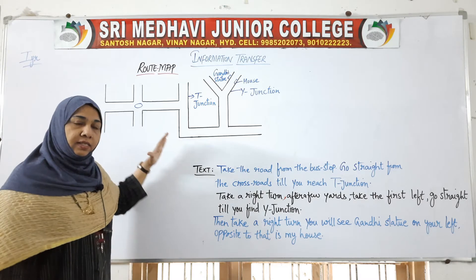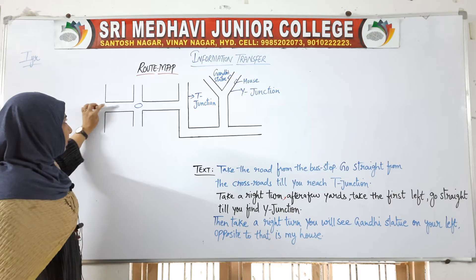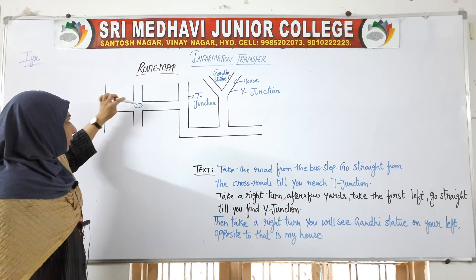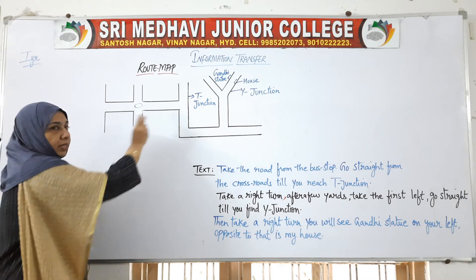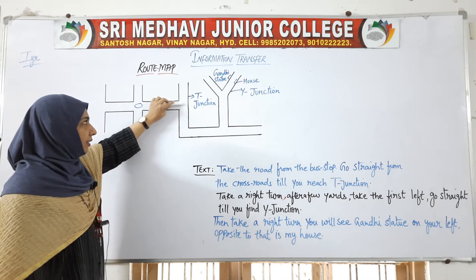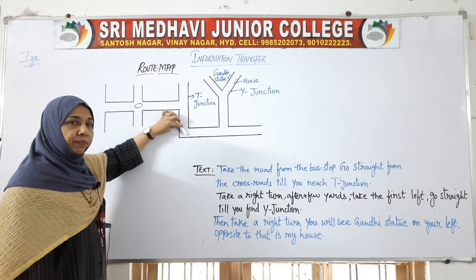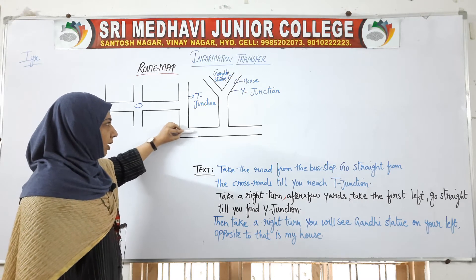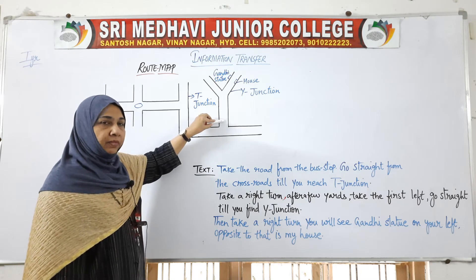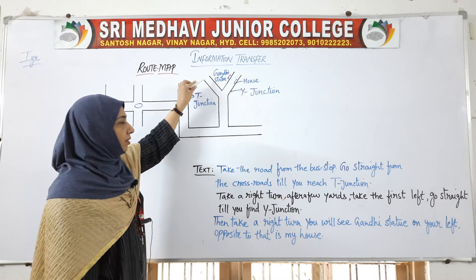Now we'll read the text. 'Take the road from the bus stop.' Imagine the bus stop is here. 'Go straight from the crossroads' — as I said, this is the crossroads. 'Till you reach the T-junction, take a right turn.' If you are standing here, your left is this side and your right is this side, so take a right turn. After a few yards, take the first left.